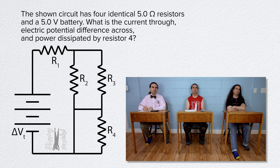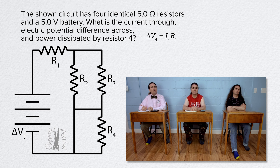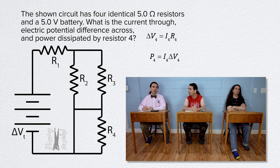Well, we know the electric potential difference across resistor 4 equals the current through resistor 4 times the resistance of resistor 4. Therefore, because we know the resistance of resistor 4, if we know either the current through or the electric potential difference across resistor 4, we can determine the other unknown. However, we do not currently know either of those.